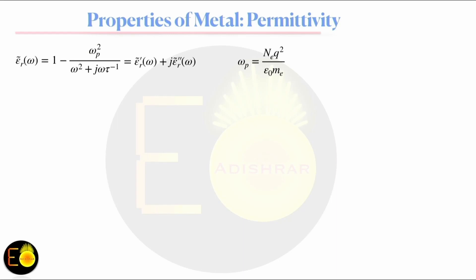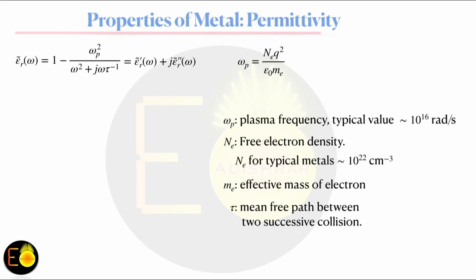The parameter omega_p is known as the plasma frequency and is of most interest in this topic. The order of the plasma frequency for a typical metal is 10^16 radians per second. The plasma frequency takes into account the free electron density of order 10^22, the permittivity of free space, the effective mass of the electron M_e, and the charge of the electron q. The parameter tau is the mean free path between two successive collisions — the average path an electron travels between two collisions.